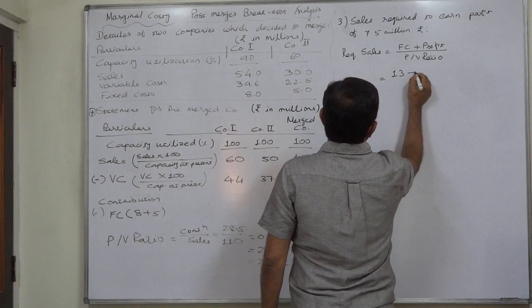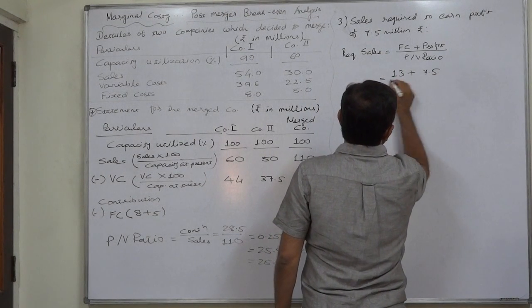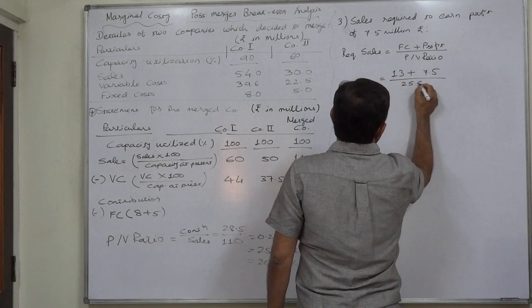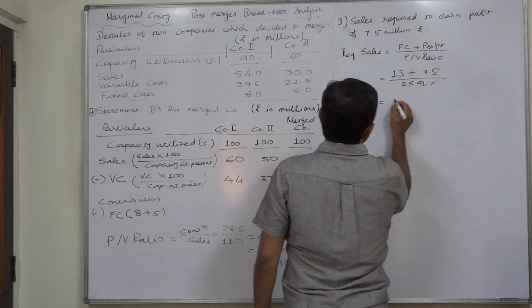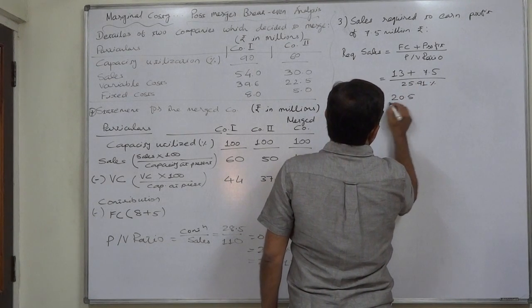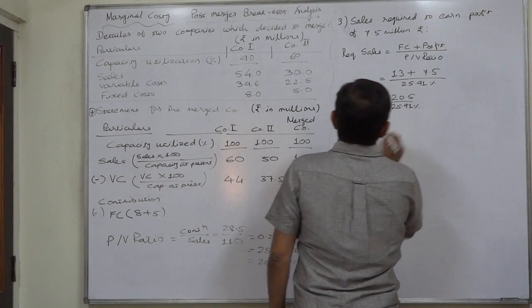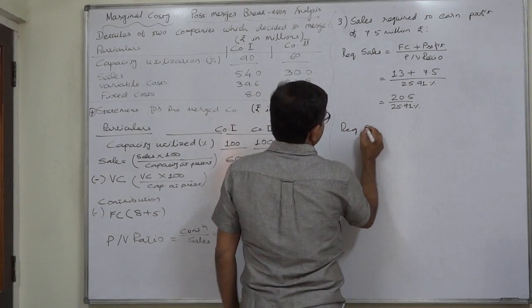13 million fixed cost, 7.5 million desired profit, 25.91 percent PV ratio. So the required sales comes to 79.123 million rupees.